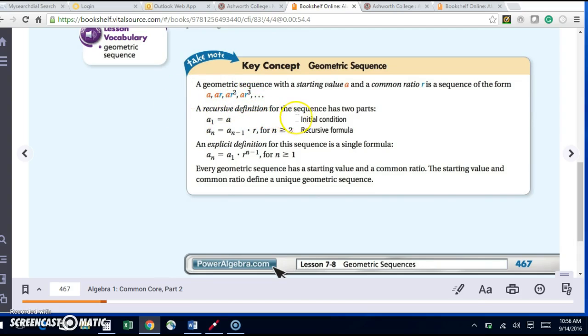A recursive definition for the sequence has two parts. So I have A sub 1, which is my initial condition, and A sub 1 is just saying this is the first term, which is the initial condition.